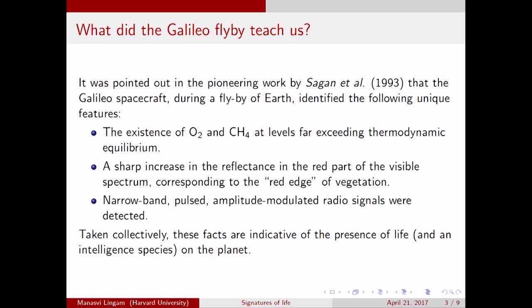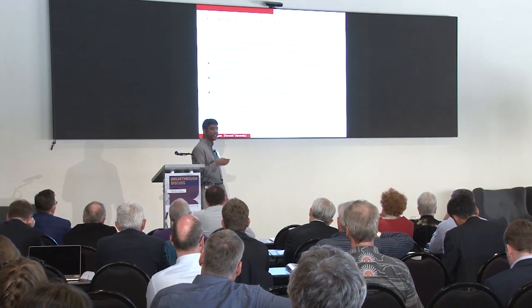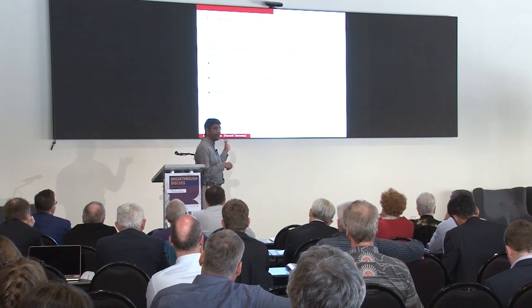Let me briefly look at what the Galileo probe told us. In 1990, the Galileo mission flew by the Earth, and in a very interesting paper by Sagan et al., they reported some of the features found during that flyby. Firstly, they found that oxygen and methane were at levels much higher than what one would expect from thermodynamic equilibrium. Secondly, they found a sharp increase in reflectance in the red part of the spectrum — the red edge of vegetation. And lastly, they found narrowband pulse amplitude modulated signals.